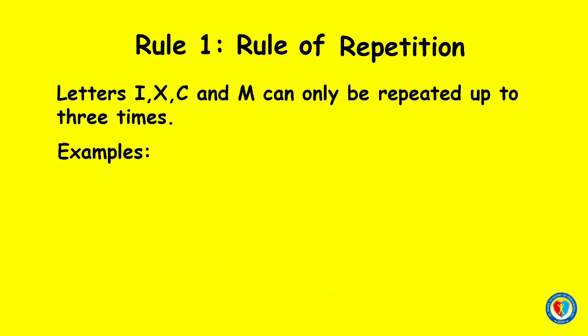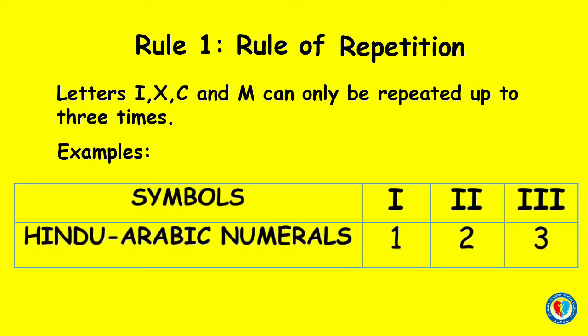Rule number one: rule of repetition. Letters I, X, C, and M can only be repeated up to three times. For example, we can write one as I, two as II, and three as III.